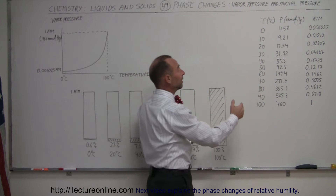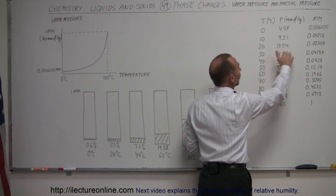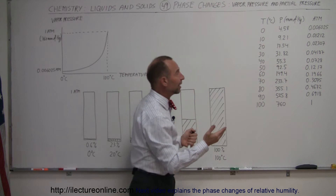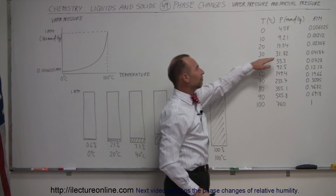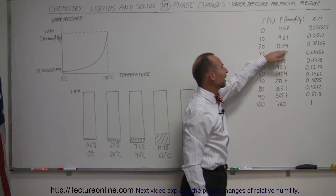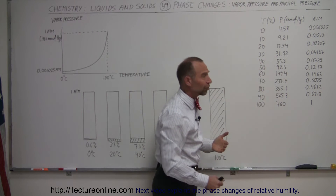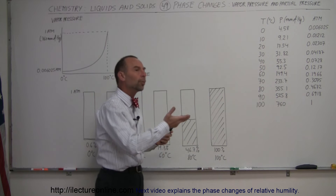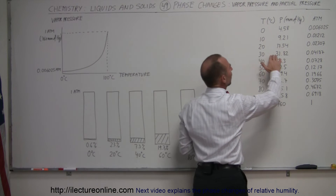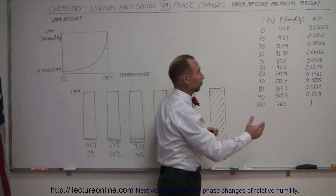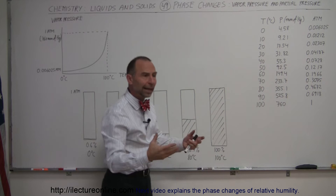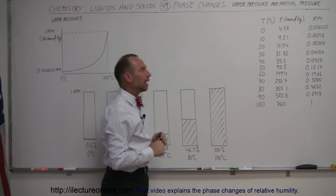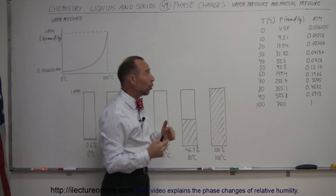That doesn't mean that when it's 20 degrees outside the air contains 17.54 millimeters of mercury partial pressure of water vapor — it means it can be up to that amount. So if the vapor pressure in the atmosphere at 20 degrees centigrade is less than 2.3 percent of the total atmospheric pressure, then water can continue to evaporate and the rate of evaporation will be larger than the rate of condensation, bringing more and more moisture into the air. As soon as the vapor pressure reaches 2.3 percent, or 17.5 millimeters of mercury, the rate of evaporation will equal the rate of condensation and no additional water vapor will go into the atmosphere.